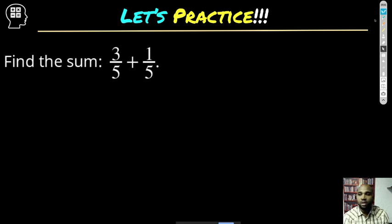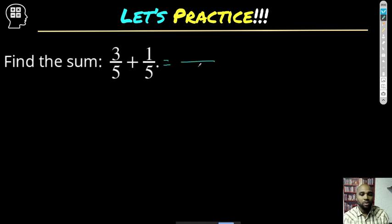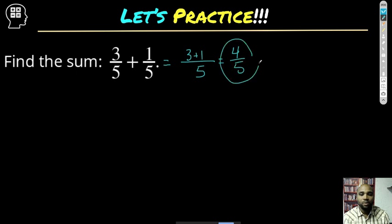Let's practice. Find the sum — think to yourself or solve it before I do. I know the denominators are the same, so that stays as five on the bottom. I'm just going to add the numerators together. Can I add three plus one? Sure — three plus one is four. So the answer is four over five, and I'm done with that problem. Simple as that.